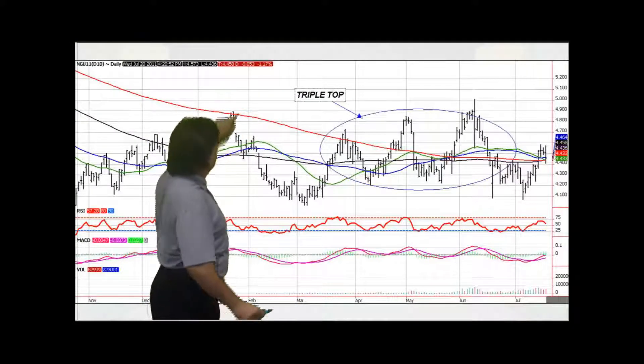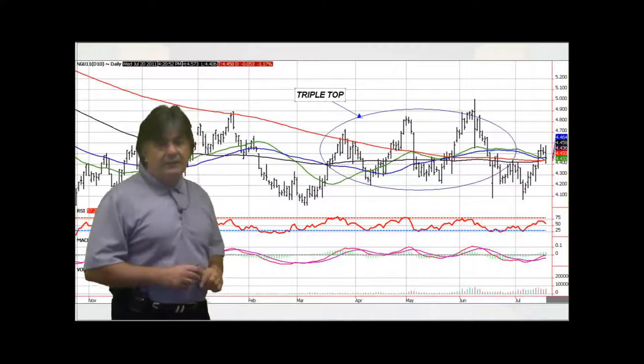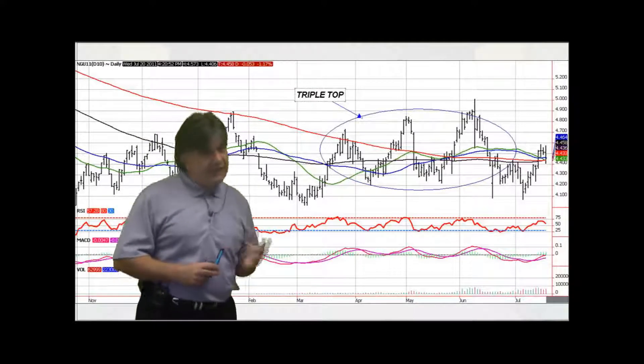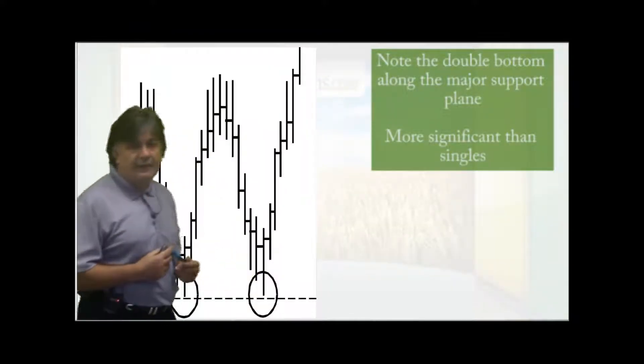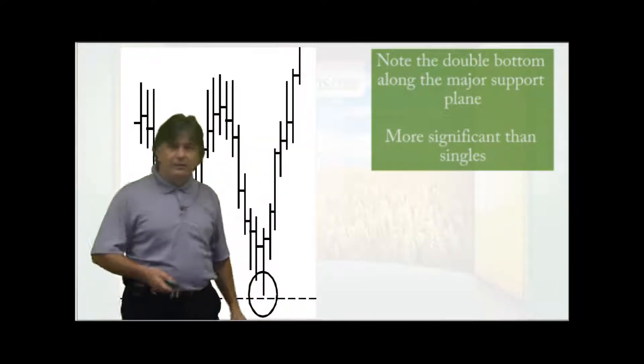So in this example, you can see the triple top. More significant than the single or double, triple tops are rare. Here's an example. I tried to find one for you. I think I found one. 2011 September natural gas daily futures chart. And you can see that triple top there on the chart.